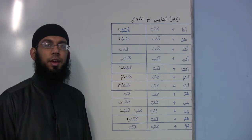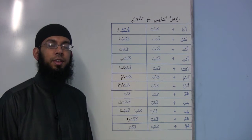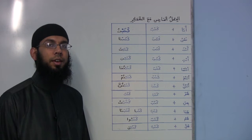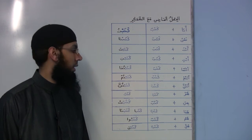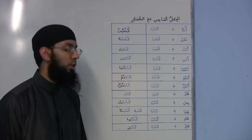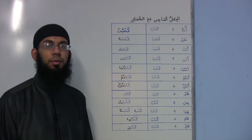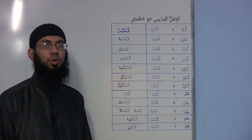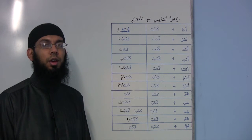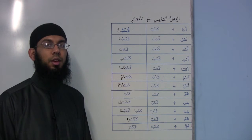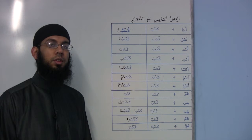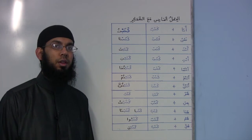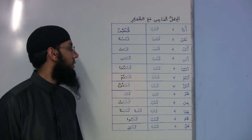Ana, nahnu, enta, enti, entuma, entum, entunna, hua, hiya, huma, hum, hunna. If you do not know the meaning, then you should not be on this class. You should go back to الدرس الثاني and you should not be watching this class until you have memorized الدرس الثاني.